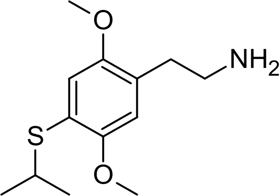2-CT4 is the 2-carbon homologue of all F4. The full chemical name is 2-(4-isopropylthio-2,5-dimethoxyphenyl)-ethanamine. The drug has structural and pharmacodynamic properties similar to 2-CT7 and 2-CT9.